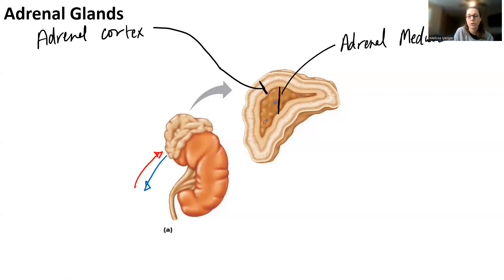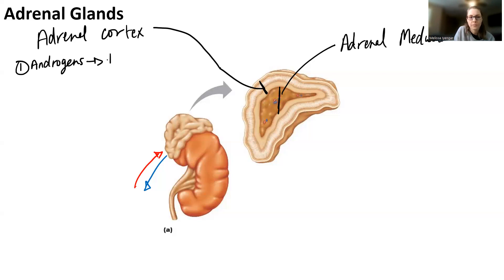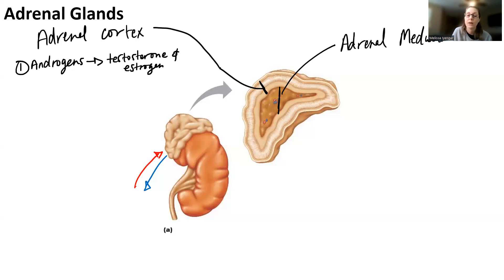Let's go over the adrenal cortex first. The adrenal cortex makes three types of hormones. The first type are androgens. Androgens are basically precursors to sex hormones — you create androgens and then transform them into testosterone and estrogen. These are some of the first sex hormones produced during puberty to help start the whole reproductive process.